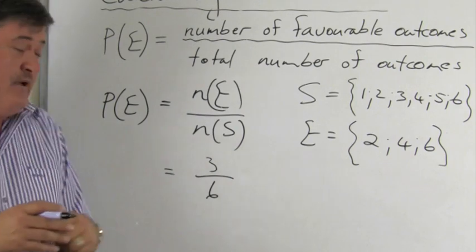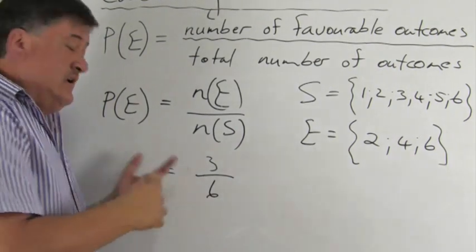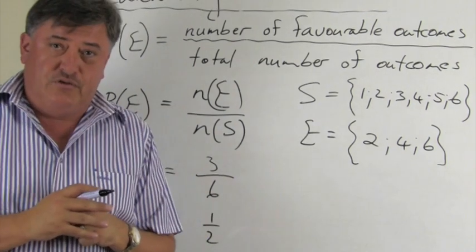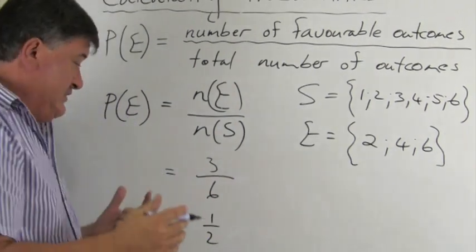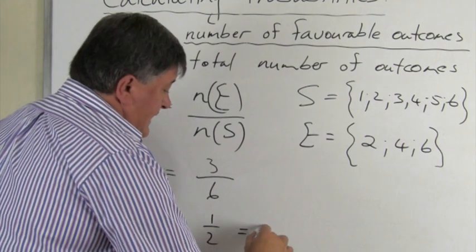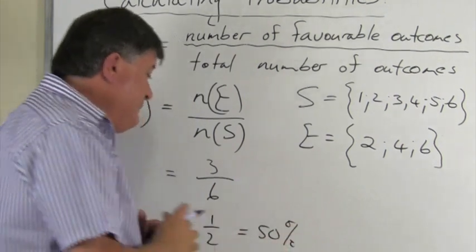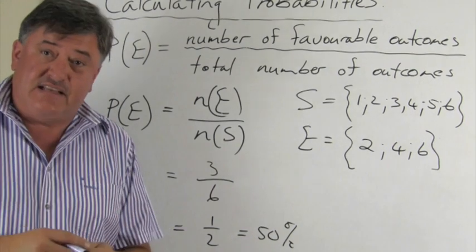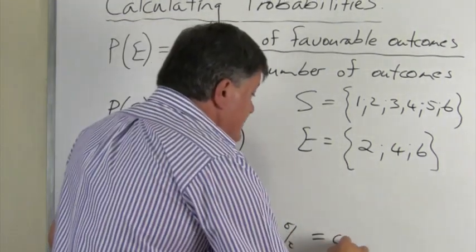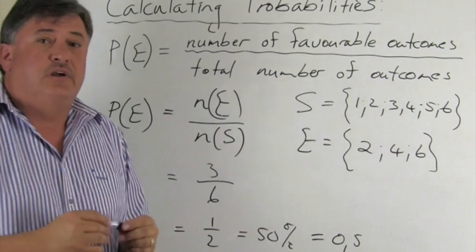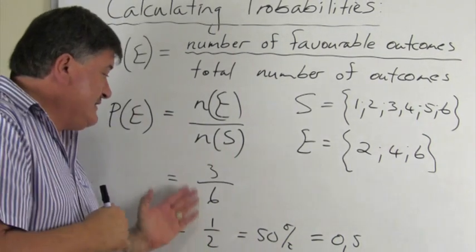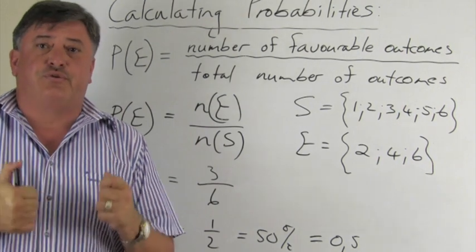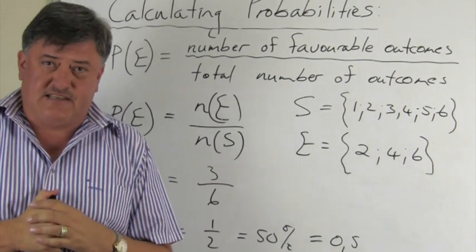The sample space n(S) equals six, so the probability is three over six. You can simplify this to one over two, or express it as 50 percent, or as the decimal 0.5. Any one of these three ways may be used to give a probability answer.